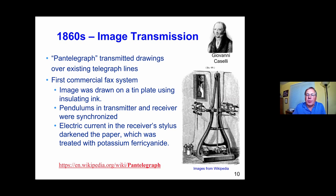Just a few years after telegraphs were available, there was a commercial system that allowed you to transmit images. You had to draw the image on a tin plate using an insulating ink. A pendulum in the transmitter moved back and forth, converting that two-dimensional image into an electrical signal. The signal was transmitted over the line, and at the receiver an electric current in the stylus darkened paper that had been treated with potassium ferrocyanide when the electric current went through it.